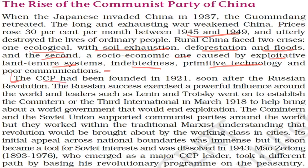The Communist Party of China had been founded in 1921, soon after the Russian Revolution. The Russian success exercised a powerful influence around the world. Leaders such as Lenin and Trotsky went on to establish the Comintern, or the Third International, in March 1919, to help bring about a world government that would end exploitation. The Comintern and the Soviet Union supported communist parties around the world, but they worked within the traditional Marxist understanding that revolution would be brought about by the working class in cities — meaning they favored the growth of industries.